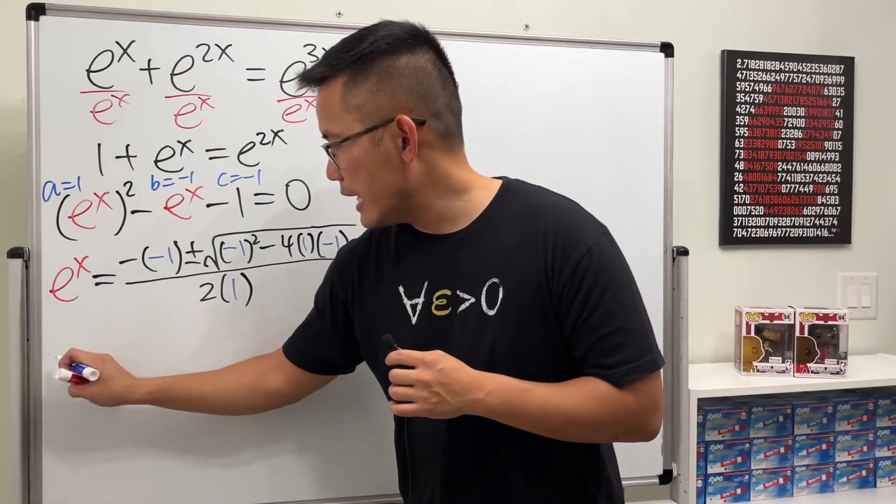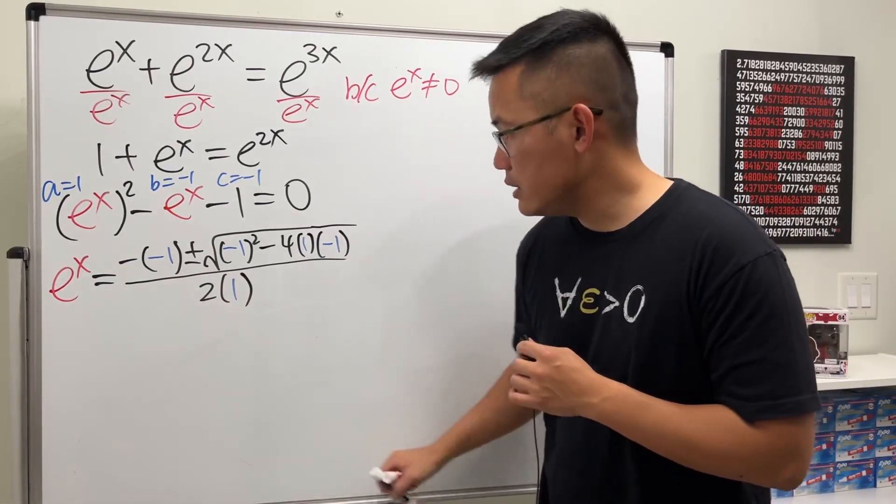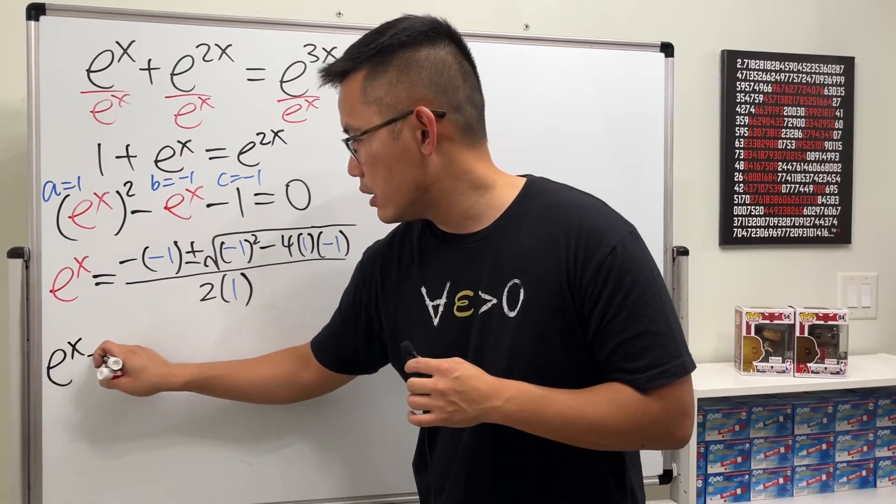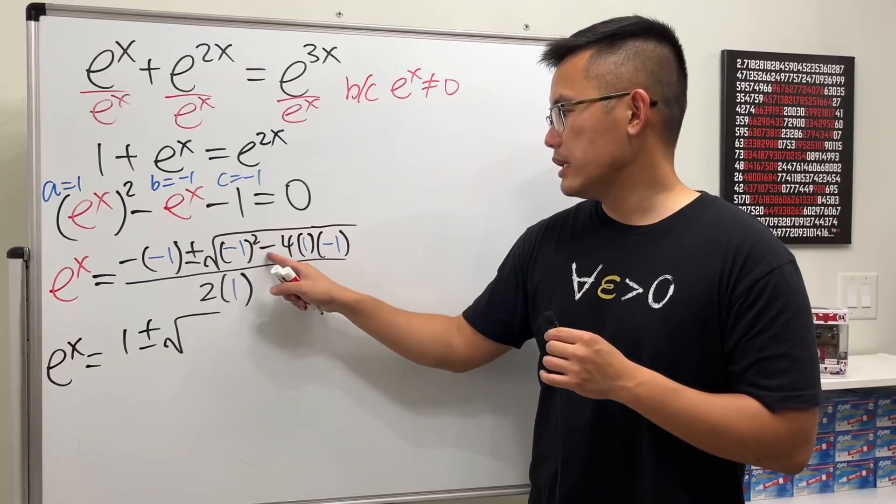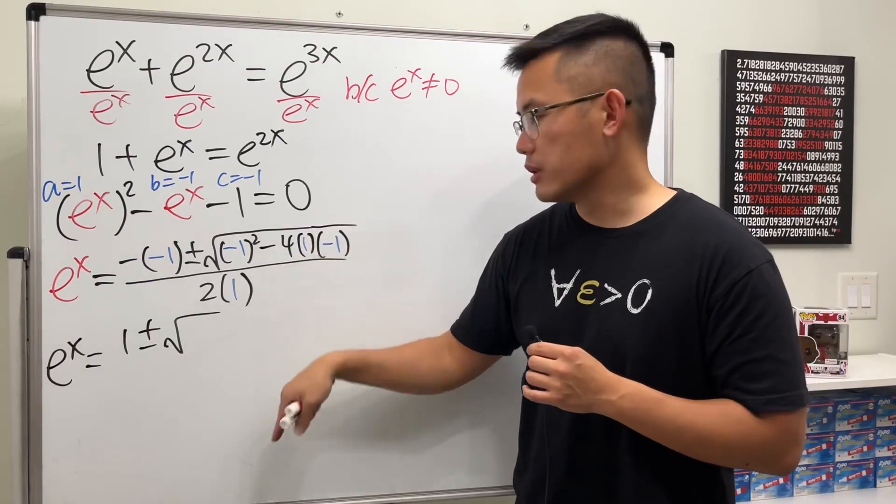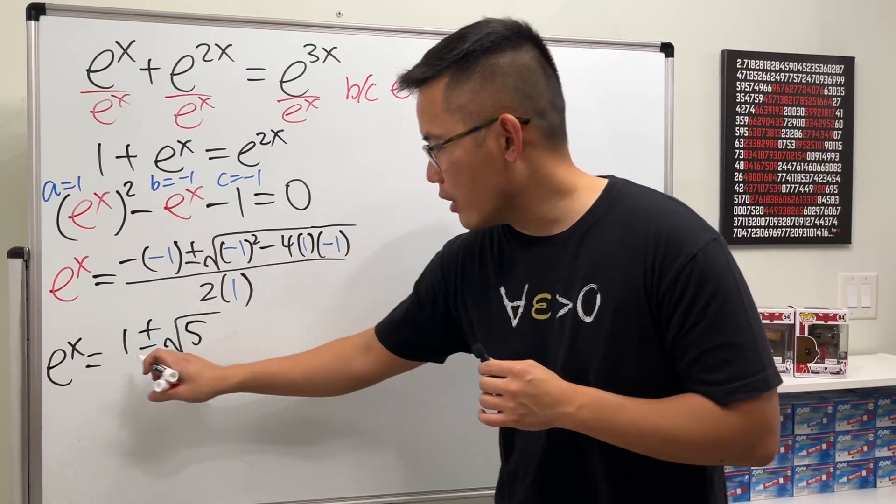So we are looking at e^x is equal to 1 plus or minus square root... and this is 1 and then plus 4, right? So all together we have 5 inside, and all over 2.